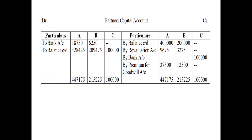On the debit side, items that decrease capital balances are shown. The goodwill withdrawn by sacrificing partners: A withdraws Rs 18,750 and B withdraws Rs 6,250, shown as 'to cash account.' C is not withdrawing anything because he is bringing the goodwill, not receiving it.